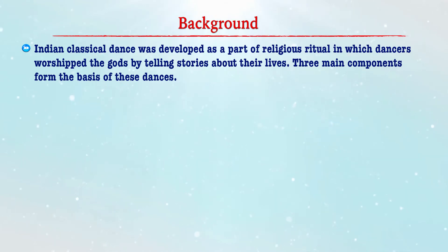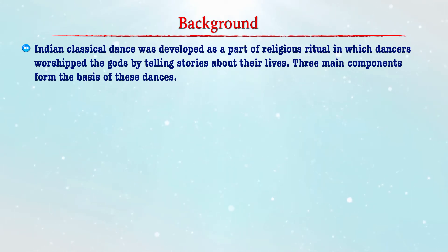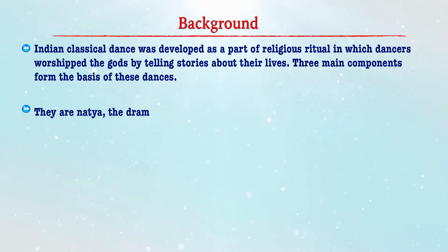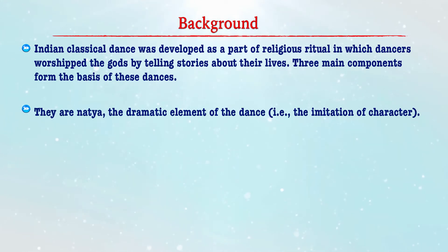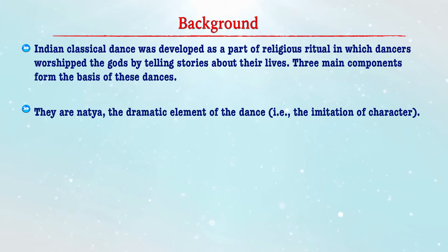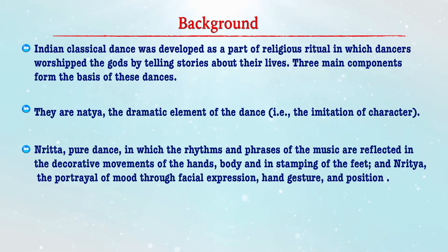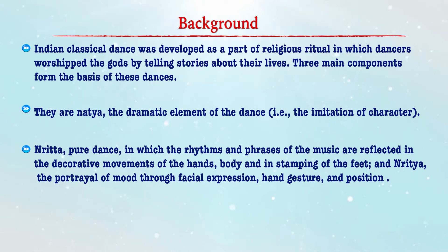Indian classical dance was developed as a part of religious ritual in which dancers worshipped the gods by telling stories about their life. There are three important components which form the basis of these dances. The first is Natya, which represents the dramatic element of the dance. Nritya is pure dance in which the rhythms and phrases of the music are reflected in the decorative movements of hand, body and feet. And Nritta is the portrayal of music through facial expressions, hand gestures and position of leg and feet.